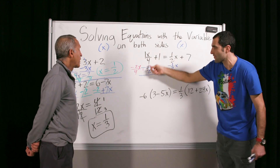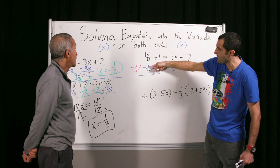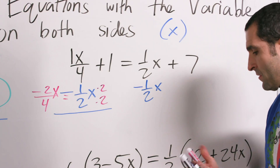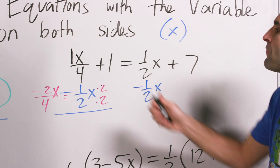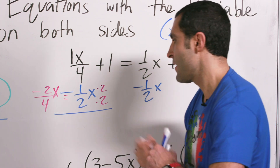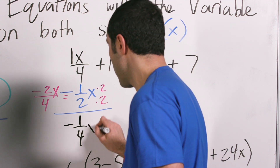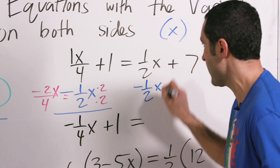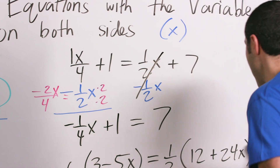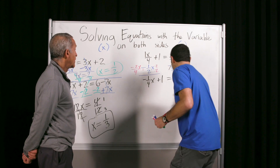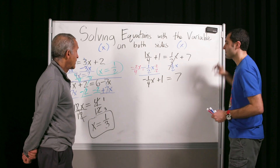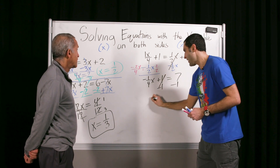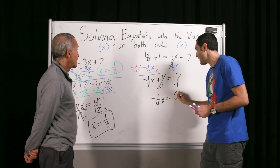Because now we know we're in like terms. What's one x over four minus two x over four? Minus one x over four. One fourth minus two fourths is negative one fourth x. Let's bring all this down: plus one equals seven. Do what to both sides? Minus one. Gone. Negative one over four x equals six.